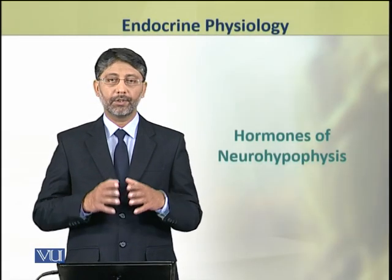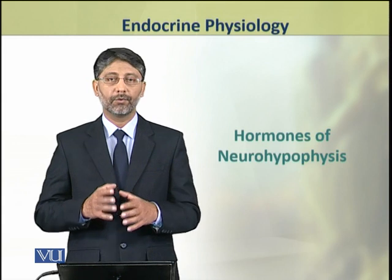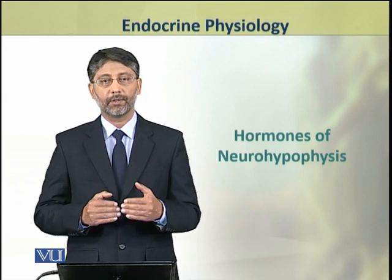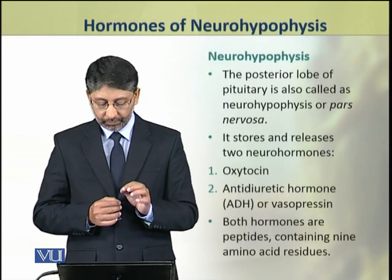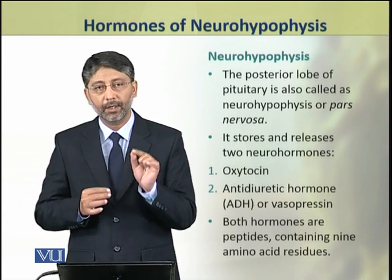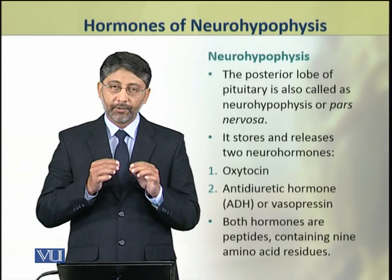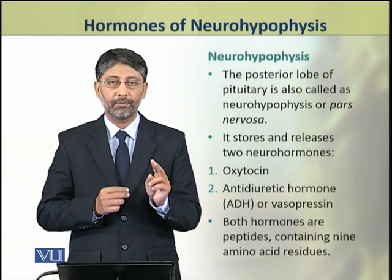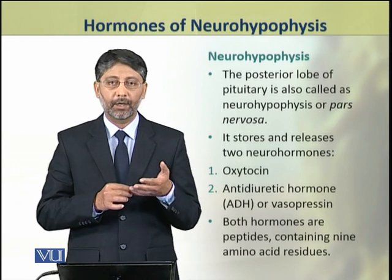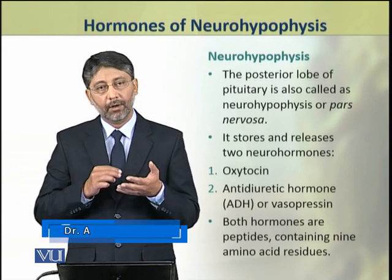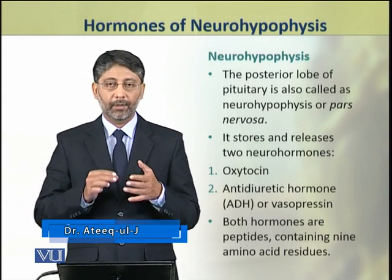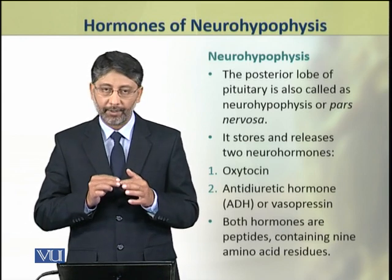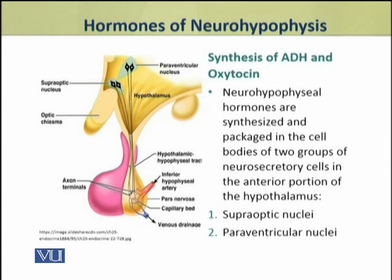In this topic we shall discuss the hormones of neurohypophysis, that is the hormones of the posterior lobe of pituitary. The posterior lobe of pituitary is also called neurohypophysis or pars nervosa. It stores and releases two hormones: the antidiuretic hormone ADH and oxytocin. Both these hormones are peptides containing nine amino acid residues.